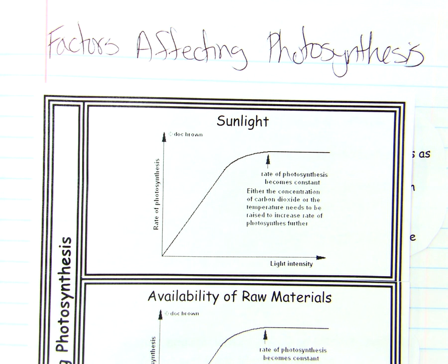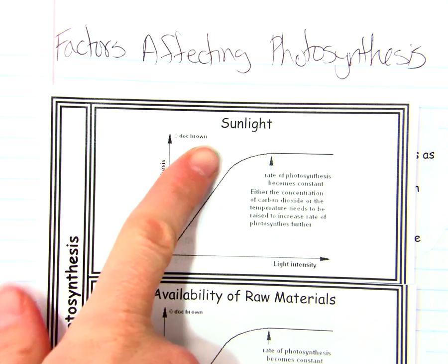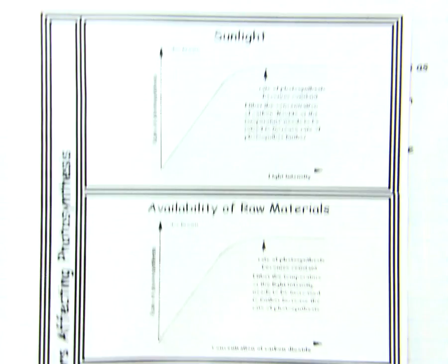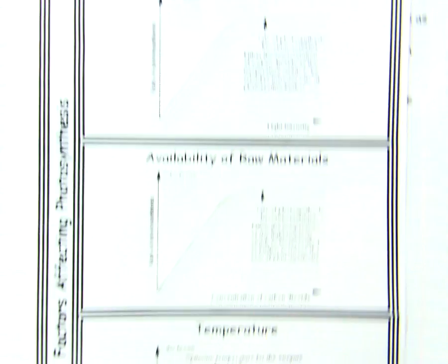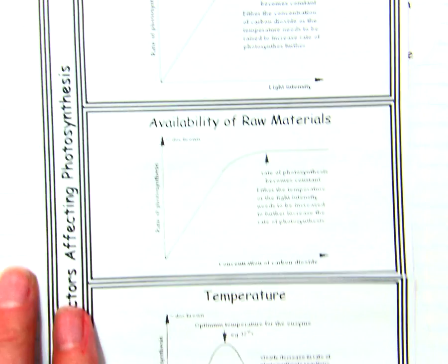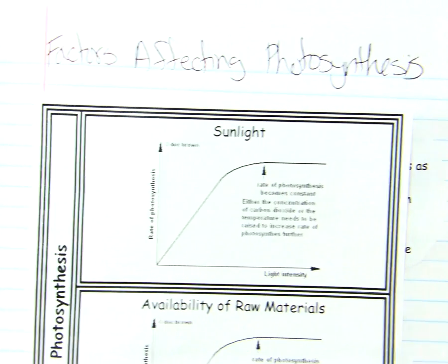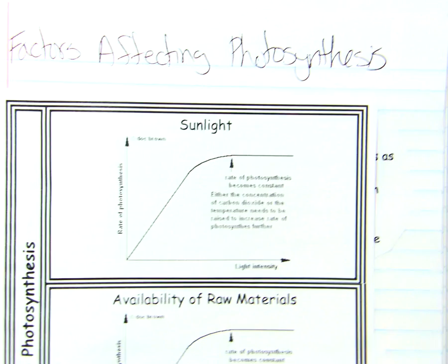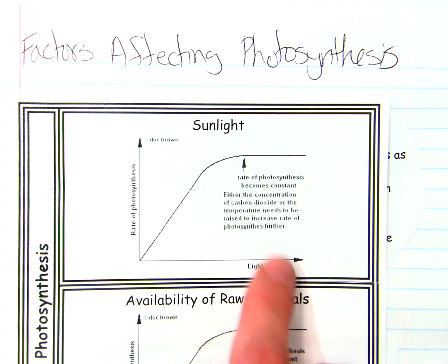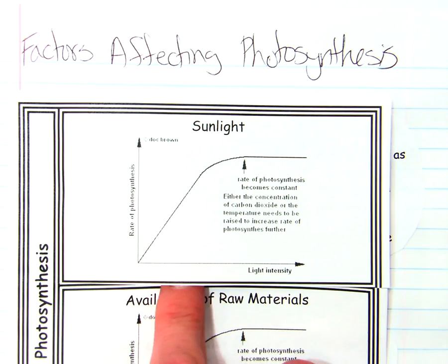All right, for our next set of notes: factors affecting photosynthesis. We have three of them — sunlight, availability of raw materials, and temperature — and these are all things that are going to impact how quickly photosynthesis can occur. In our lab tomorrow, we'll be using an online simulation to investigate these more closely.